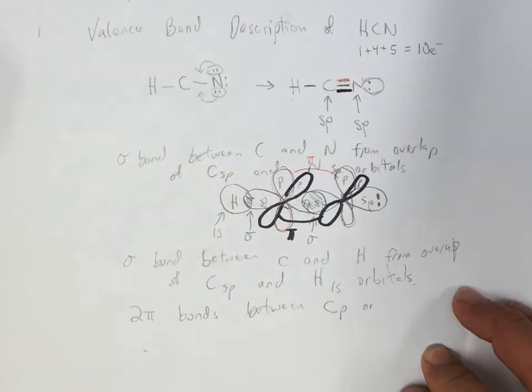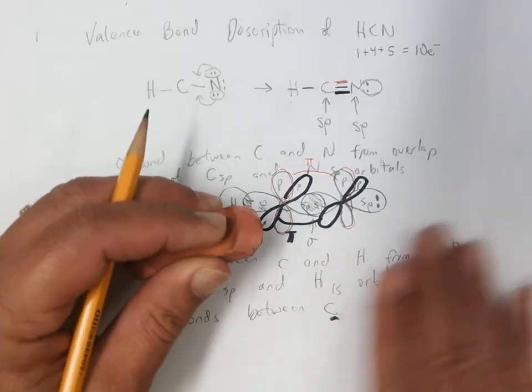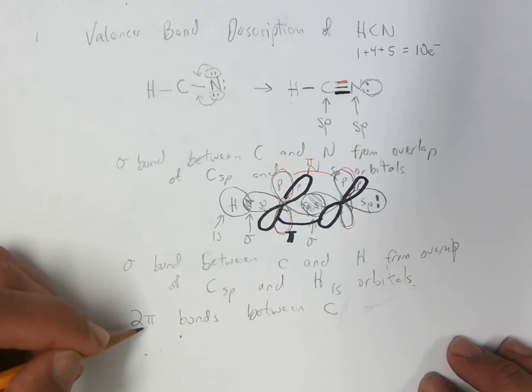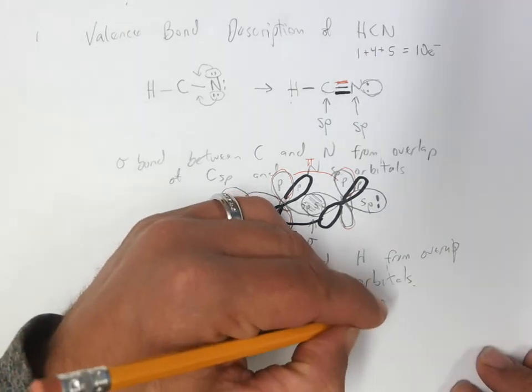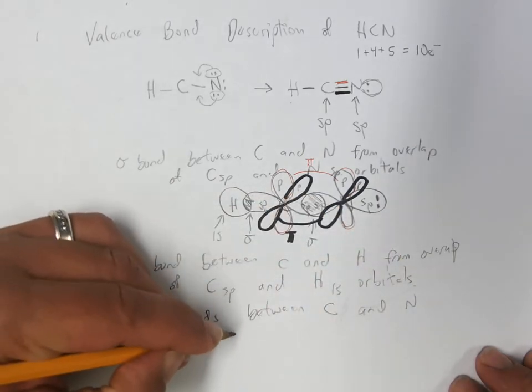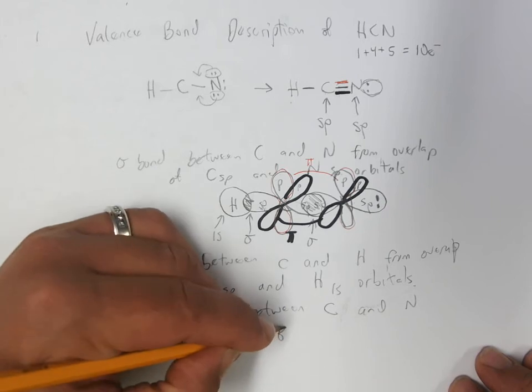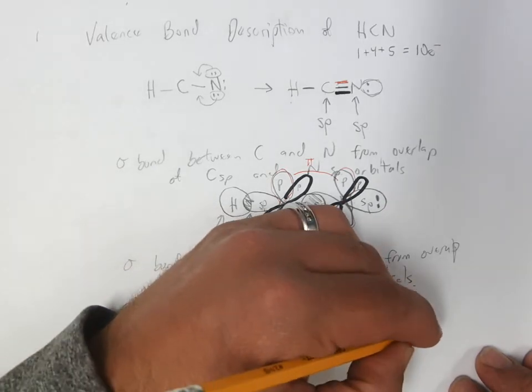And actually, a better way to phrase that is the same structure I was doing above. So it's good to be consistent in your phrasing. So we have two pi bonds between carbon and nitrogen from the overlap of carbon p and nitrogen p orbitals.